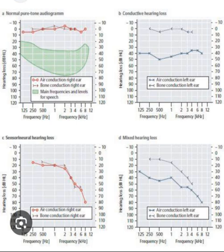The arithmetic mean of the air conduction thresholds at 500, 1000, and 2000 Hz is calculated for each patient and termed the pure tone average (PTA), which provides a rapid and simple summary of a patient's hearing in the speech frequencies. However, the PTA does not provide information about high-frequency hearing loss.